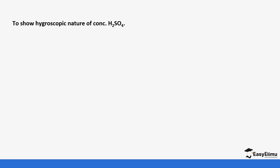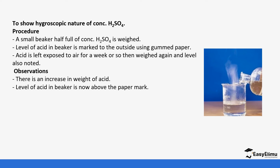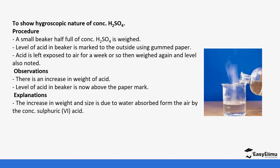To demonstrate the hygroscopic nature of sulfuric acid, we take a small beaker, add the concentrated sulfuric acid, and leave it for a few days. Before leaving it, we weigh it, and after a few days the level of the acid increases. When you weigh the final solution, the mass has increased. This increase in weight and size is due to water absorbed from the air by the concentrated sulfuric acid, which explains why it is used as a drying agent.